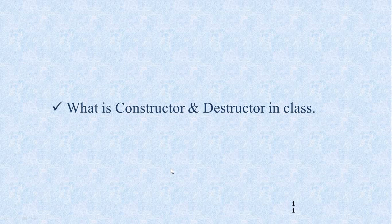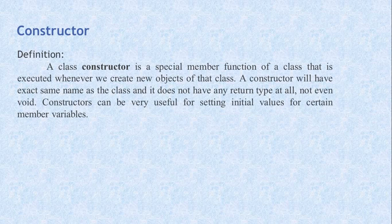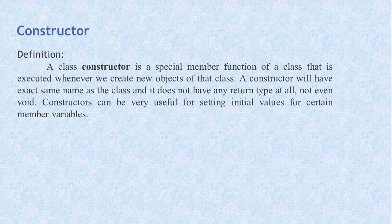Now, what is a constructor and destructor in a class? A class constructor is a special member function of a class that is executed whenever we create new objects of that class. A constructor has the exact same name as the class and it does not have any return type at all, not even void. Constructors can be very useful for setting initial values for certain member variables.